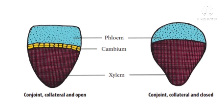Looking at the picture of collateral vascular bundles: blue color is phloem, brown is xylem. Xylem is central and phloem is on the peripheral outer side. Yellow is cambium. With cambium present, it is open collateral. Without cambium, it is closed collateral.